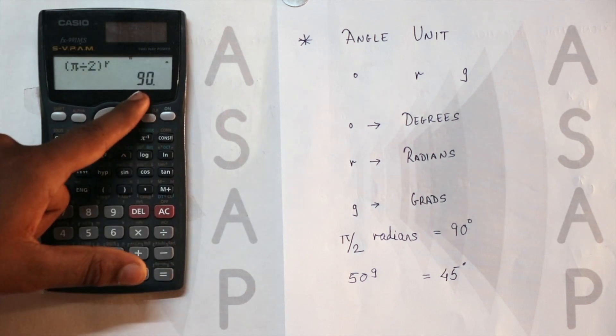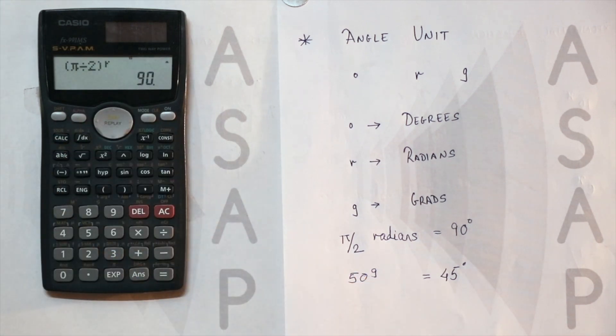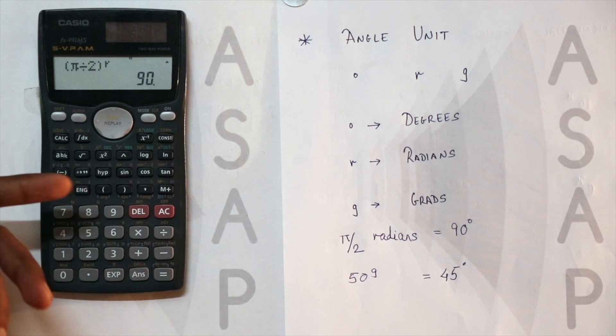And equal to... so PI by 2 radians, as we all know, is 90 degrees. That's how we get this.